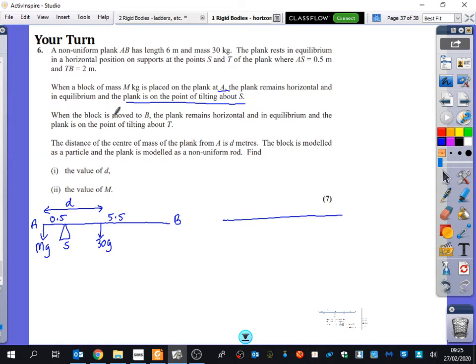Then it says, when the block is moved to B, the plank remains horizontal and in equilibrium, and the plank is on the point of tilting about T. So this time, I'm going to ignore the turning point of S, and I'm going to actually just use the one of T. I guess I technically should have put a normal reaction over here. And for this bit, I've now moved the mg to this side, and I know that this 30g is over here, and this is my distance, which is D. This distance here is 2.